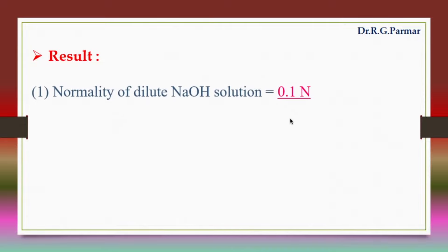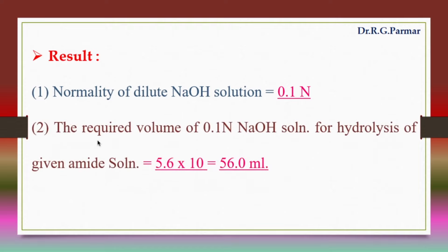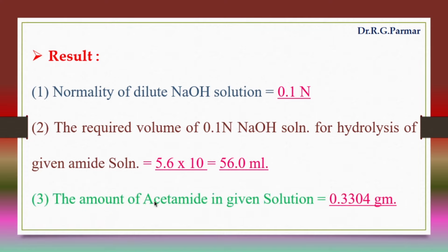Result: The normality of dilute NaOH solution is 0.1 normal. The required volume of 0.1 normal NaOH solution for hydrolysis of the given amide solution: since 5.6 ml was required for 25 ml dilute solution, for the given solution = 5.6 × 10 = 56 ml. The amount of acetamide in the given solution is equal to 0.33304 g.